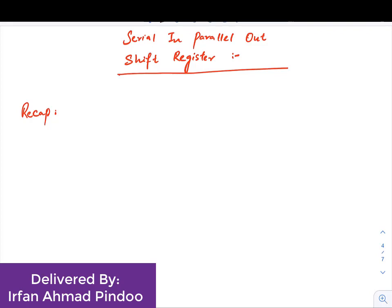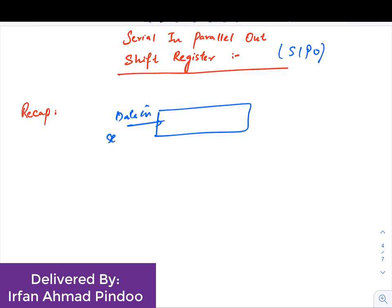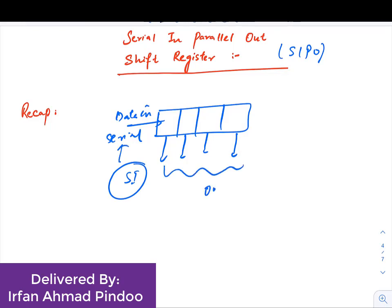Welcome back students. In this video we are going to study the second register, that is SIPO. Before we start, I would recapitulate what we have already studied regarding this — it was a register where the data was being given in a serial mode while the output would be taken across all the flip-flops. So it is serial in, and the data at the output is in the parallel form.